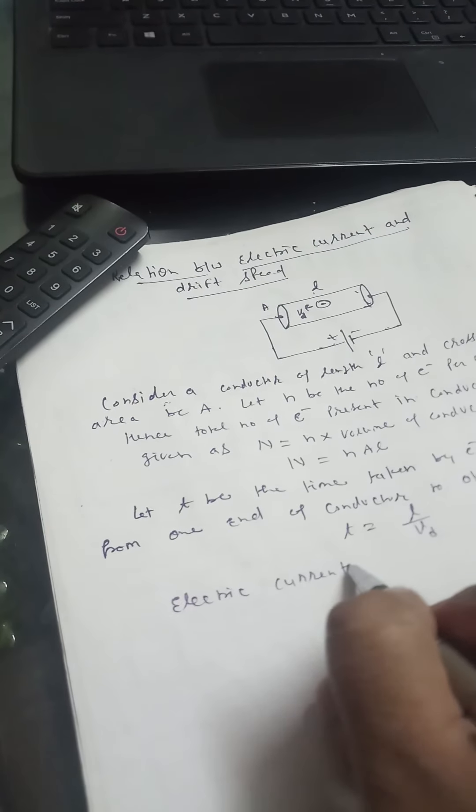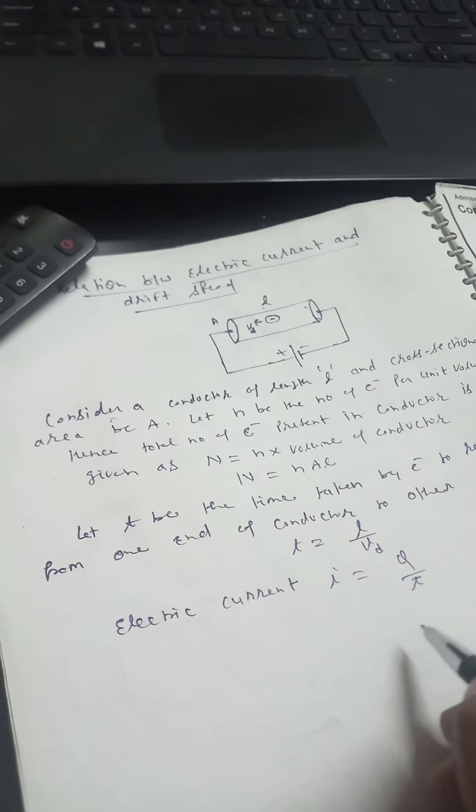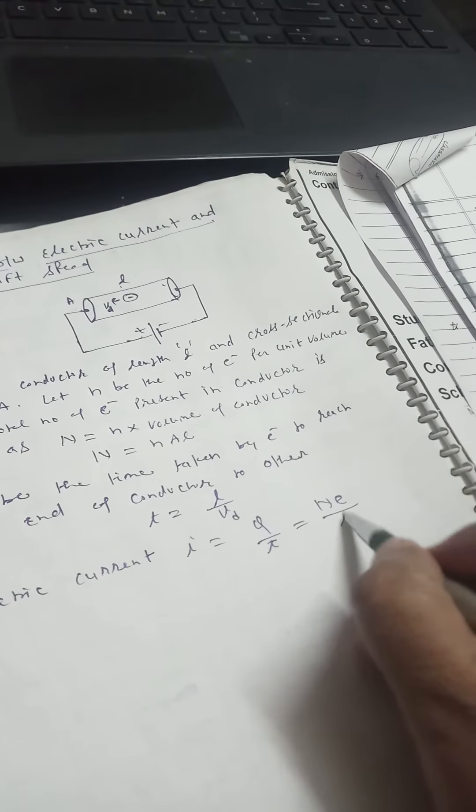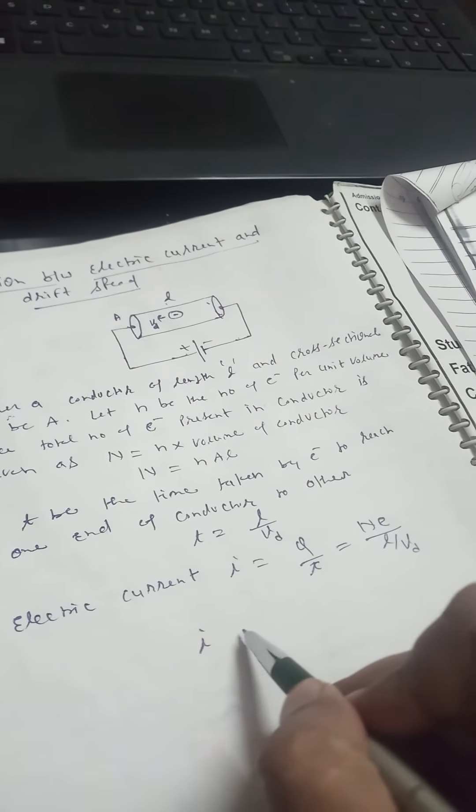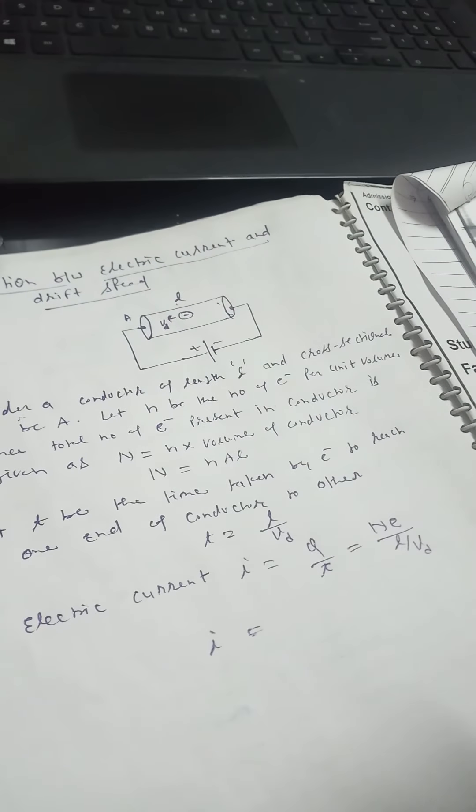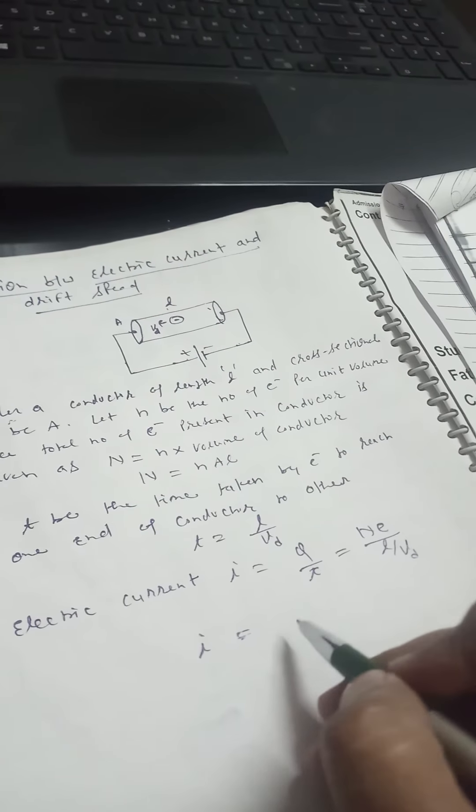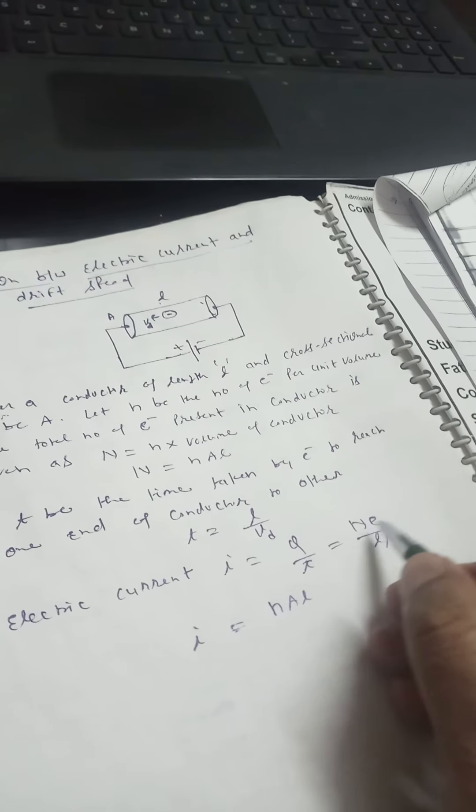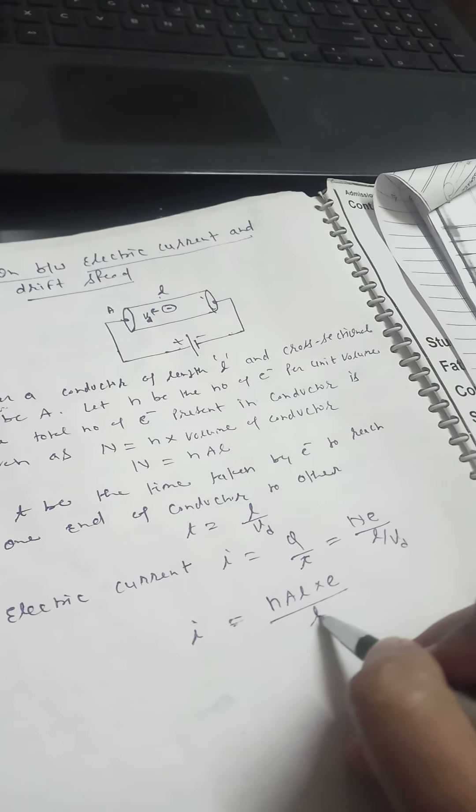Here, I equal to q upon t. Q equal to N times e. And value of t is L upon vd. Therefore, I equal to N times A times L times e divided by L. The L cancels.